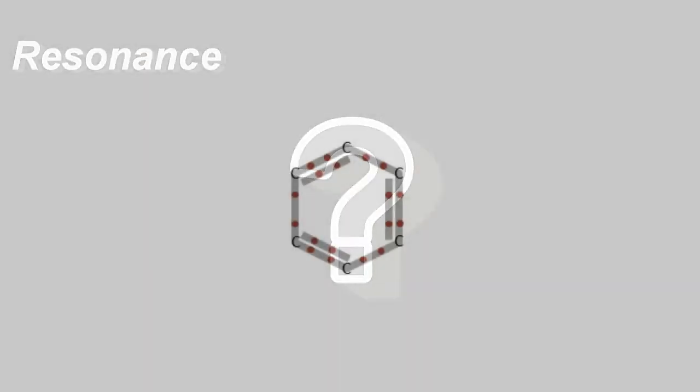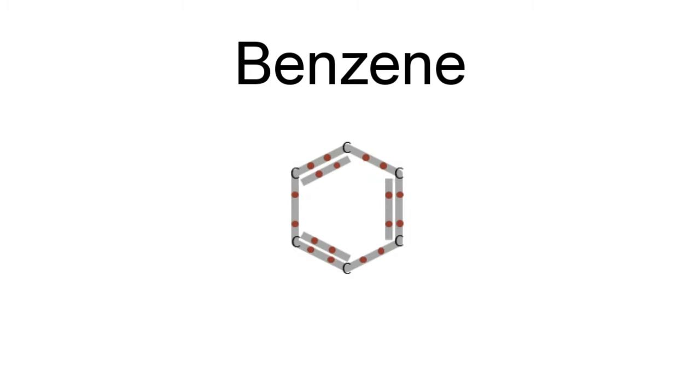Well, let's look at a simpler molecule first. Benzene, which has six carbon atoms and six hydrogen atoms, also has resonance. It can be drawn like this, or like this. But it doesn't really exist in either of these forms.